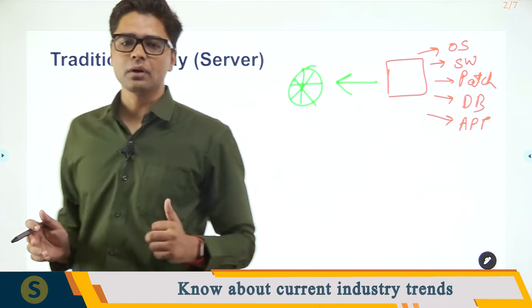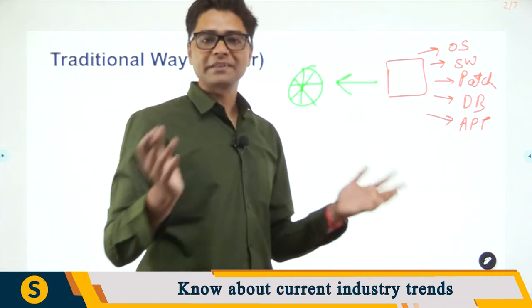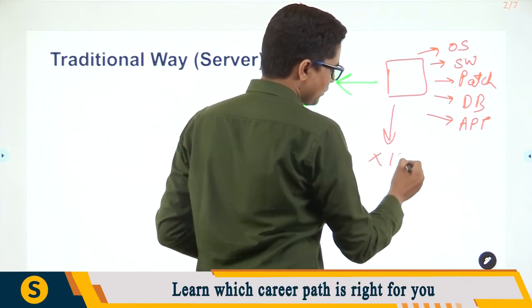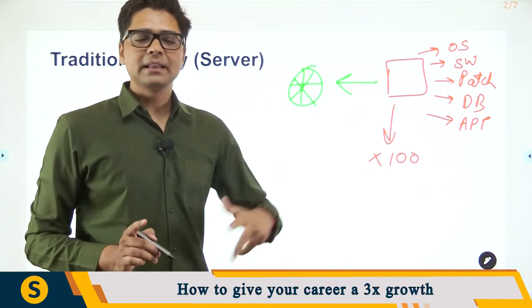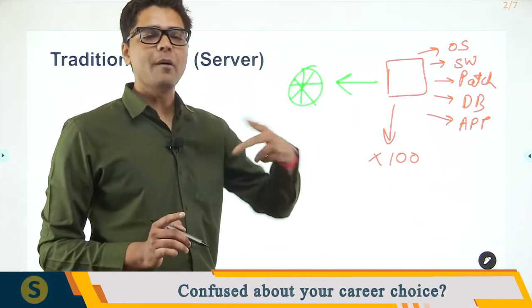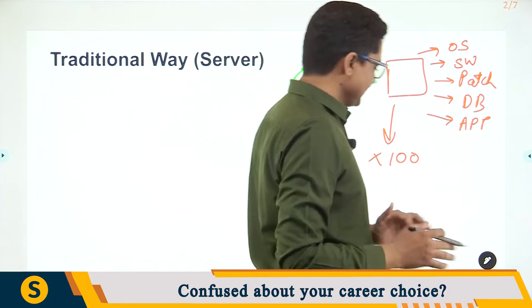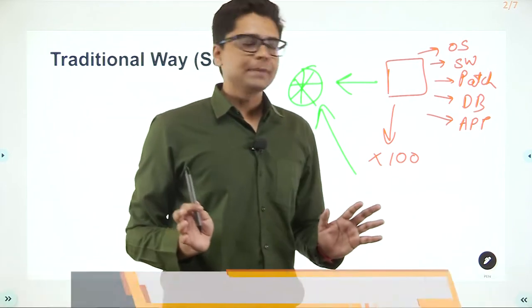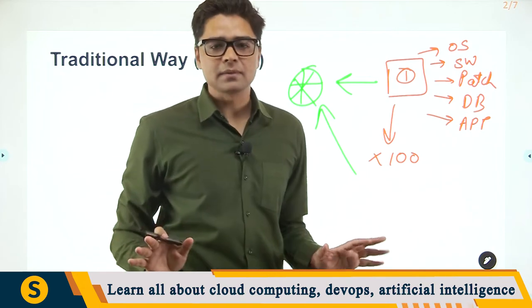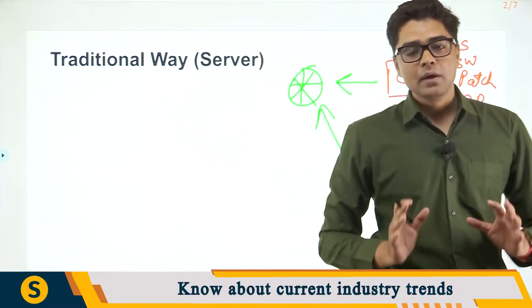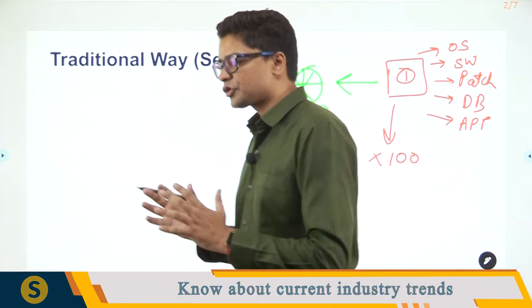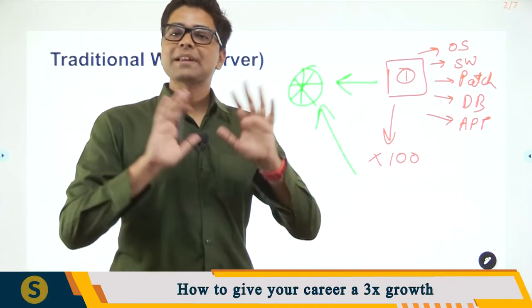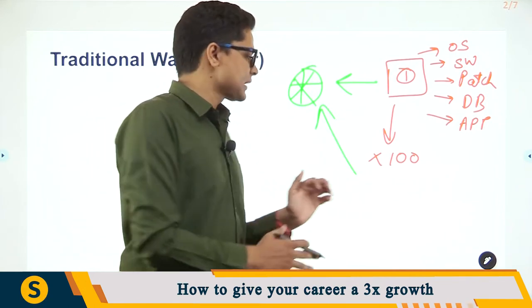Now the question is: what is the problem with this? The problem is, first of all, if your application starts to scale — Instagram has a billion users — so you have to do this for 100 different individual machines. You can understand the complexity that arises, and you have to make sure all the applications are available on the internet. Once your infrastructure starts to scale, it becomes difficult or almost impossible to manage everything happening in these servers.